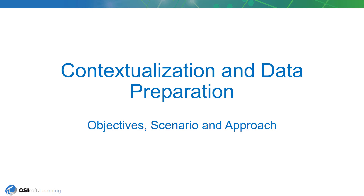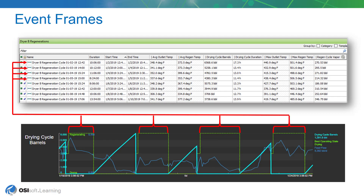In this section, we're going to be talking about contextualization and data preparation. We're going to introduce the concept of event frames, and we're going to create an event frame record for each regenerating cycle of each dryer. The event frame is a record that contains a name, a duration, a start time, and an end time, along with other information coming from the PI system that could be useful for its analysis.